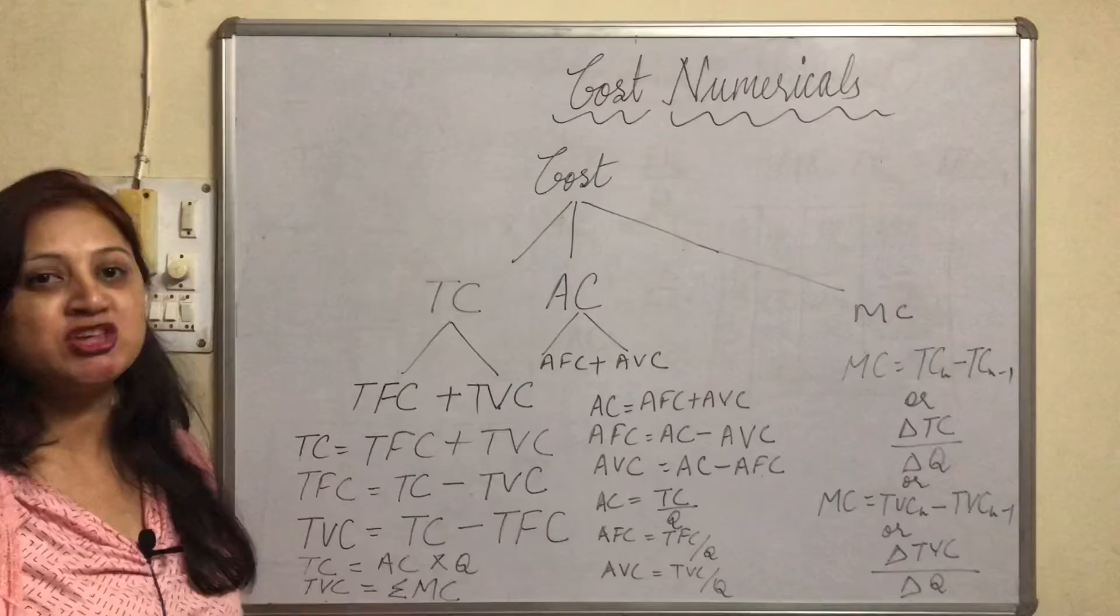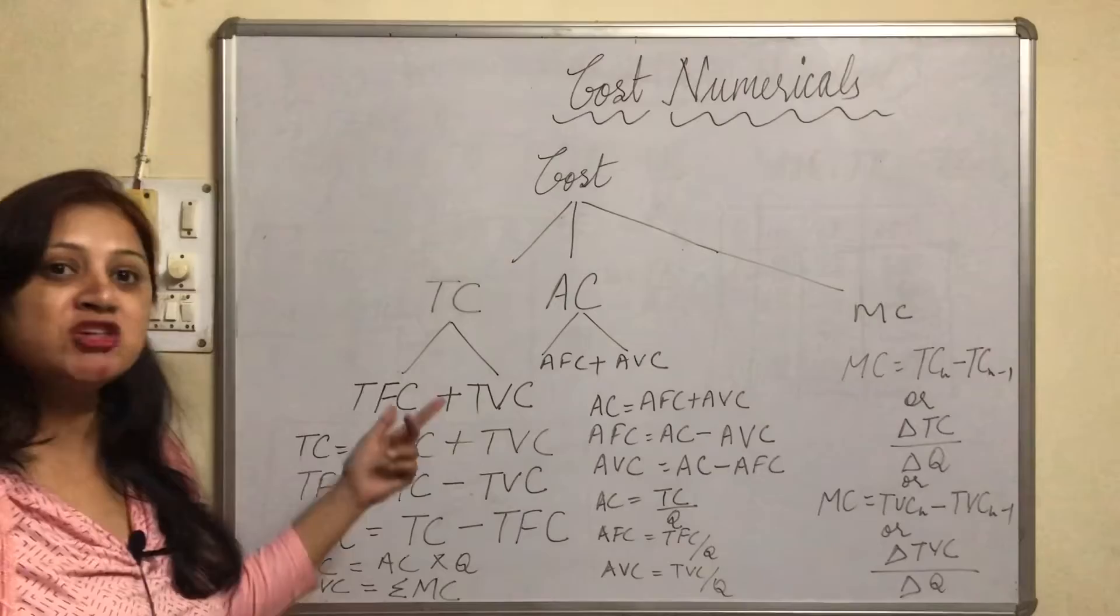because MC is only variable cost and if you do the summation of variable cost then you will have TVC.